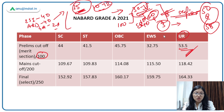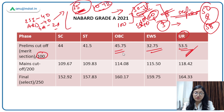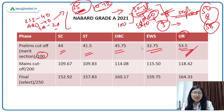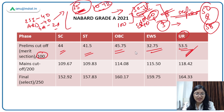Looking at the cutoff for other categories: for the Economically Weaker Section it was 32.75, for OBC it was 45.75, for ST it was 41.5, and for SC it was 44. According to your category, you can see what the cutoff was and then plan accordingly.